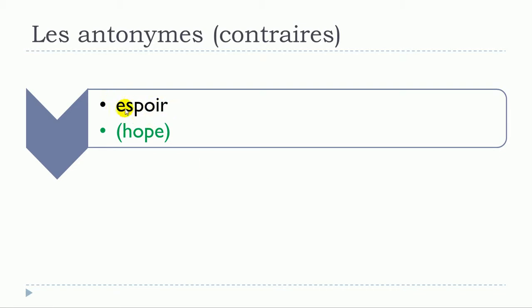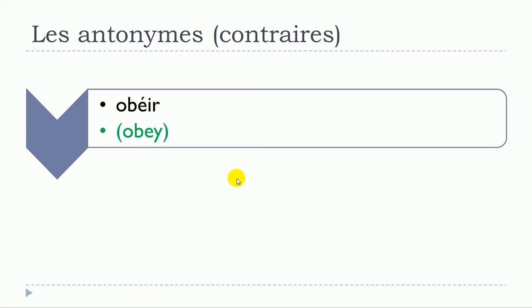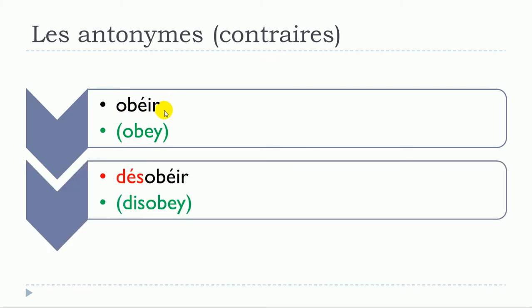The noun espoir gives us désespoir. Then the verb obéir gives us désobéir — so obéir becomes désobéir.